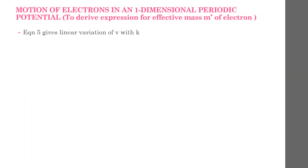This equation gives a linear variation of v with k, and this is for a free electron.